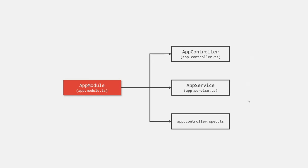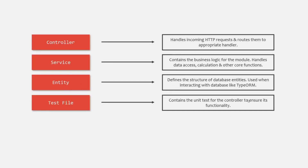The app module is the main module of our NestJS application. Whenever we create a user-defined module, that module must be connected with this app module, and we do that by importing that user-defined module inside the app module. A module can have different types of files associated with it, and the four commonly used files are: the controller file, the service file, the entity or schema file, and the test or spec.ts file. The controller file is responsible for handling all the incoming HTTP requests and routing those requests to the appropriate handler. The service file contains the business logic, including data access, calculation, and other core functionalities.